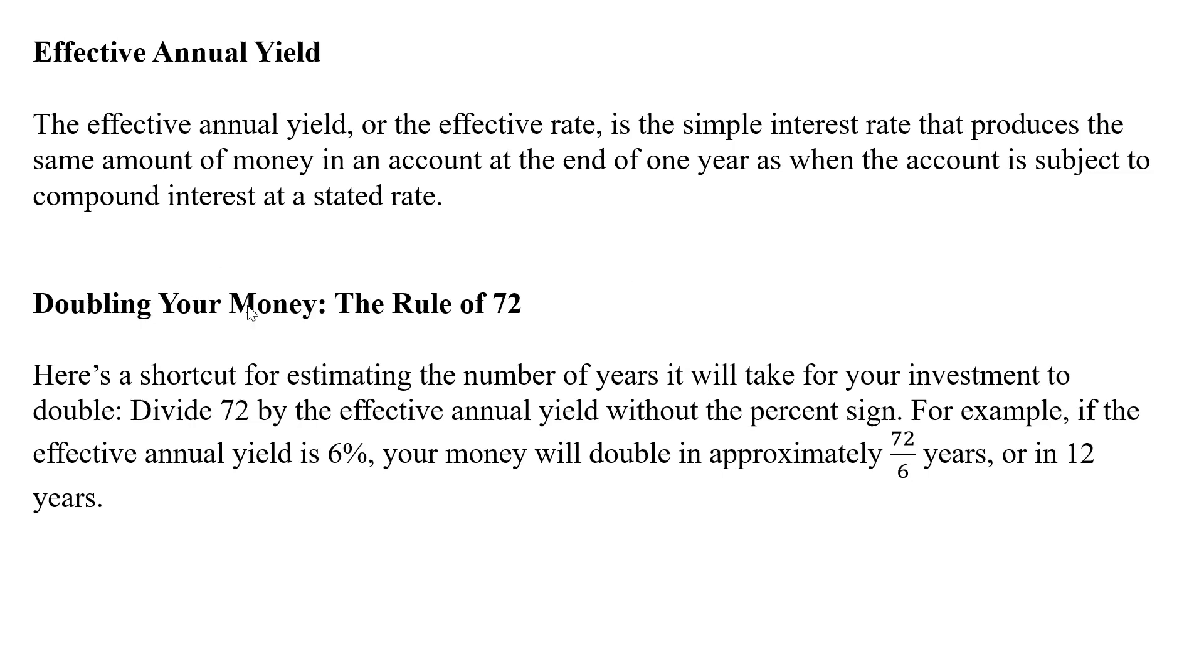There's a rule of 72, a shortcut for estimating the number of years it's going to take for your investment to double. You divide 72 by your effective annual yield without the percent sign. For example, if the effective annual yield is 6%, your money will double in approximately 72 divided by 6, which is 12 years. That's a rough estimate to figure out how long it's going to take to double your money.